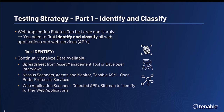The first step is to identify and classify your web applications. Web application estates can be large and unruly, and you need to first identify and classify all web applications, web services, or APIs. We need to continuously analyze the data available to us — this could be a spreadsheet from an asset management tool, developer interviews, data from Nessus Scanners, Agents, Monitors, Tenable ASM, or Attack Surface Management. We're looking for open ports, protocols, and services.